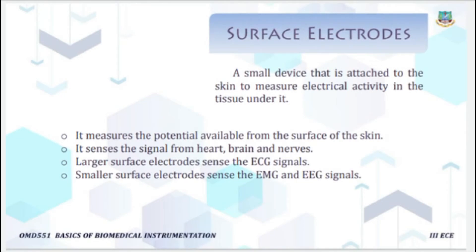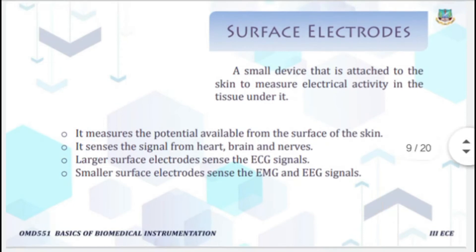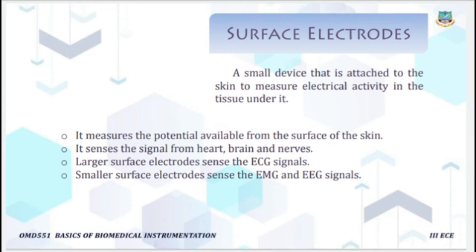Surface electrodes are placed on the surface of the skin in order to measure bioelectric potential. They are smaller devices attached to the skin to measure the electrical activity in the tissue under it. They measure the potential available from the surface of the skin — from the heart, brain, and nerves. Large surface electrodes record ECG signals, while smaller surface electrodes record EMG (electromyogram) and EEG (electroencephalogram) signals.